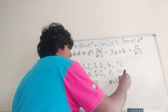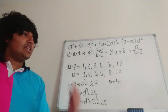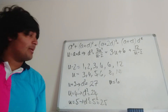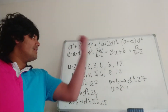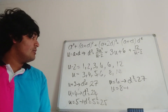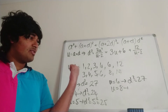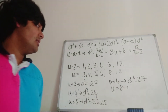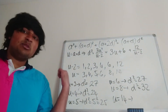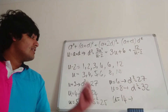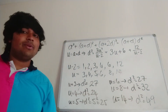When u equals 6: 3 times 36 over 4 equals 108 over 4 equals 27 — not a perfect square. When u equals 8: 3 times 64 over 6 equals 192 over 6 equals 32 — not a perfect square. When u equals 14: 3 times 196 over 12 equals 588 over 12 equals 49 — that is a perfect square! So d squared equals 49, giving d equals plus or minus 7.